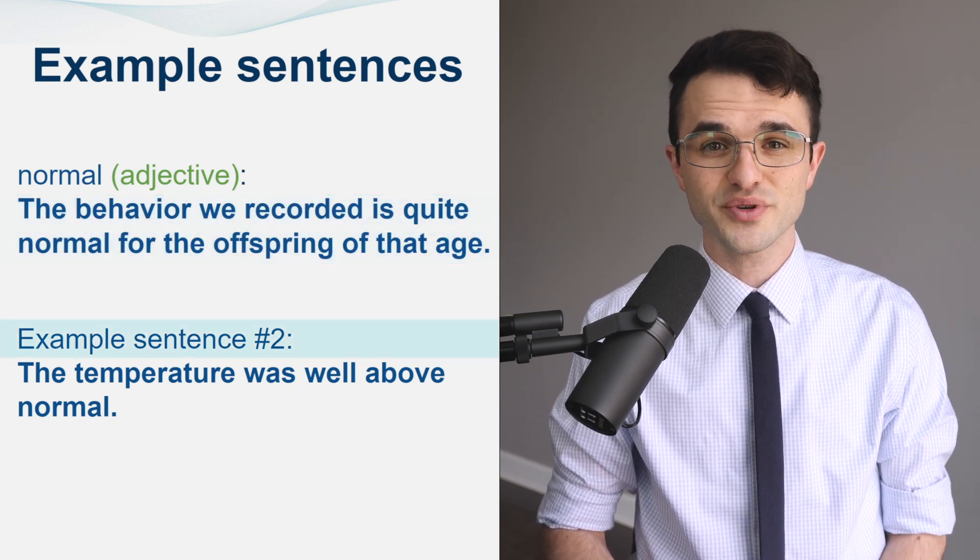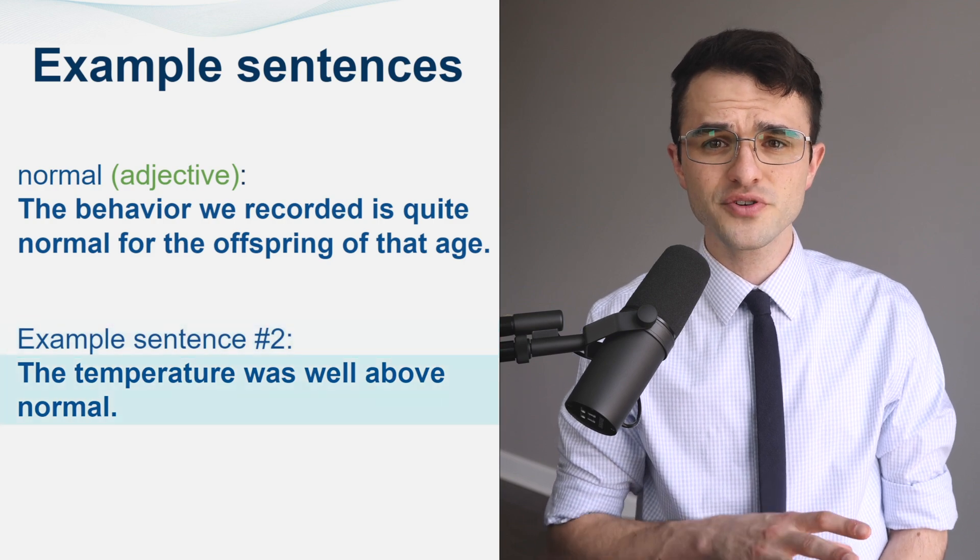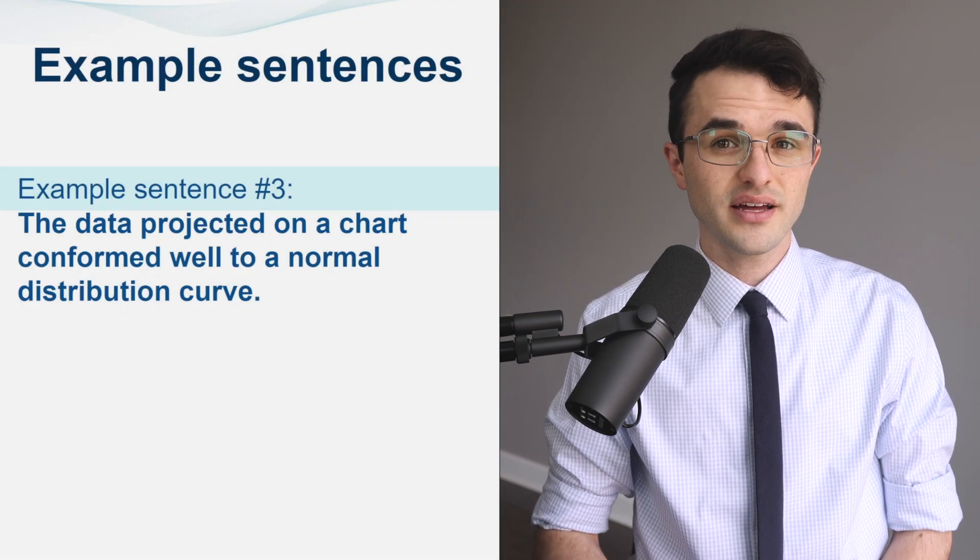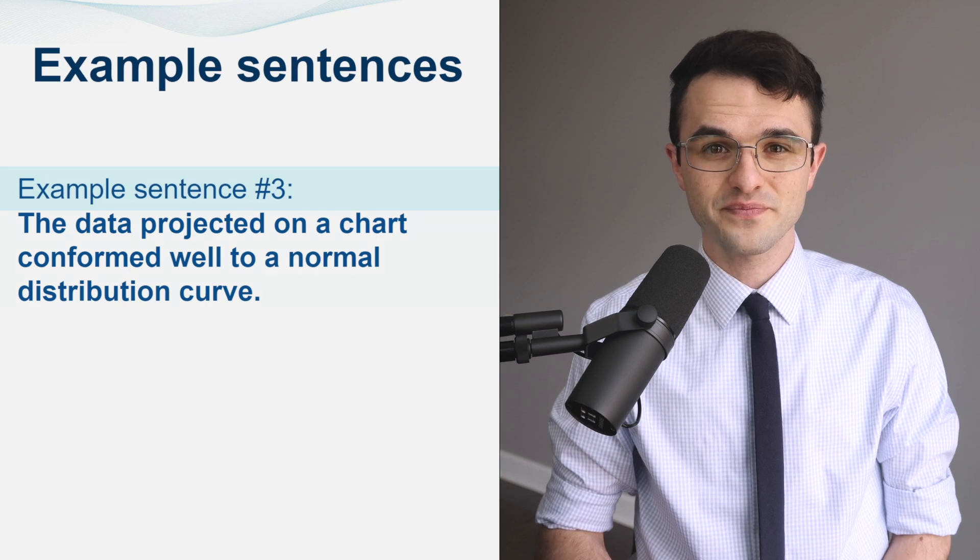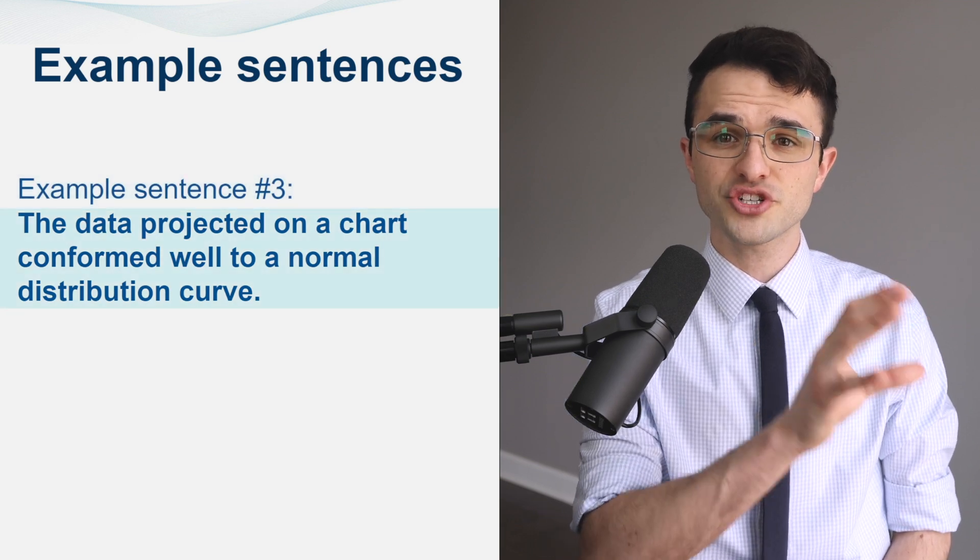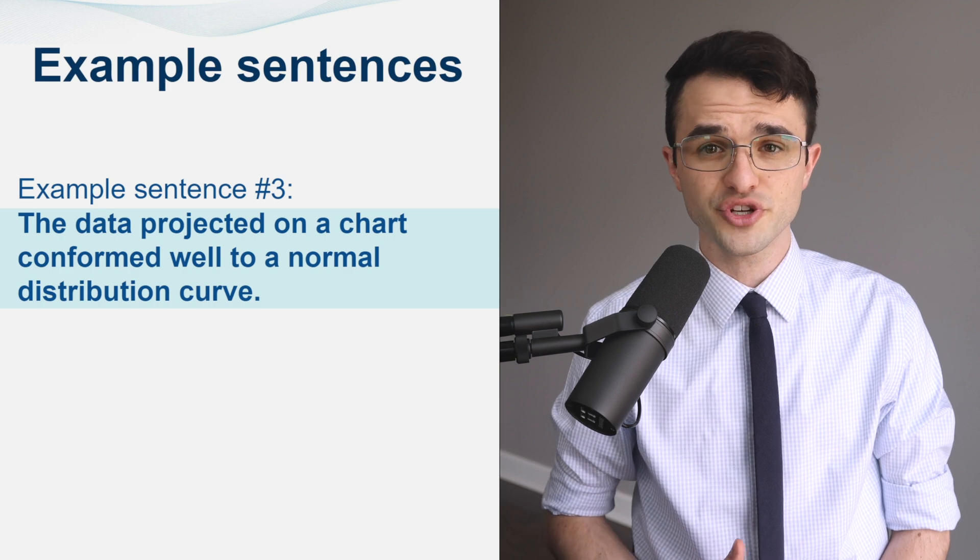Example sentence number two. The temperature was well above normal. Example sentence number three. The data projected on a chart conformed well to a normal distribution curve.